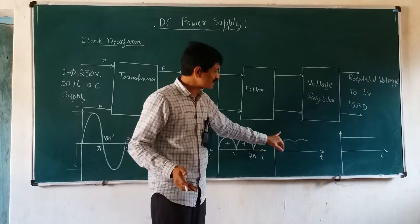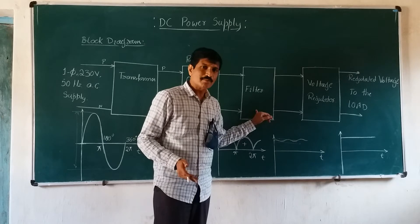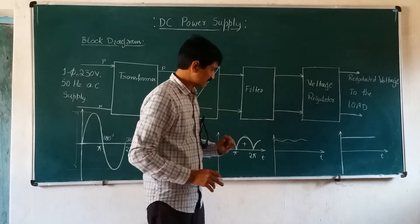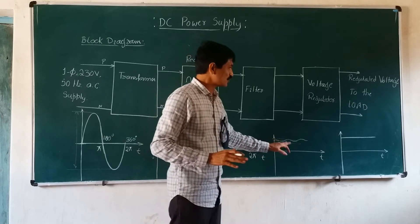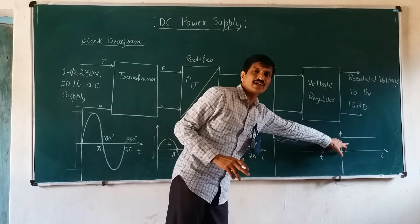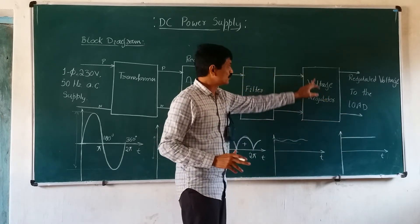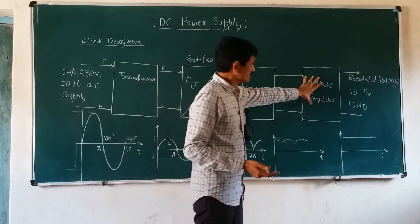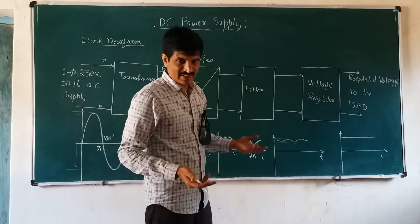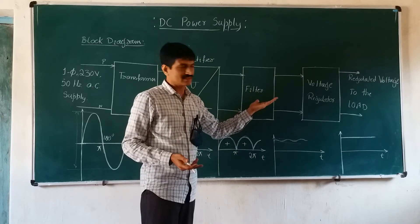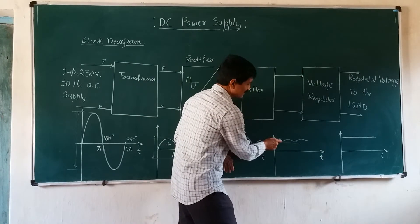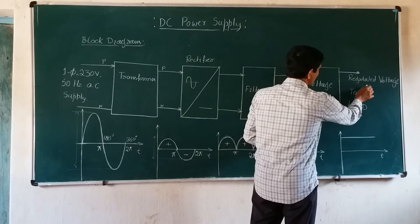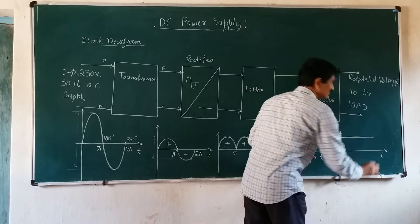We cannot expect complete removal of ripples from a simple filter circuit — it will still have a small quantity of ripples, meaning fluctuations in the output voltage. To make these fluctuations vanish and to have a clear constant voltage at the desired level of current, we go through the voltage regulator circuit, which is the last block in this DC power supply. This is generally an IC voltage regulator or an analog circuit voltage regulator. It takes the pulsating DC as input and regulates the voltage to supply the load at a constant level and desired current rate.